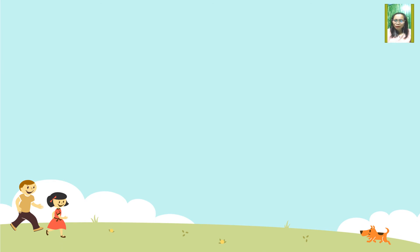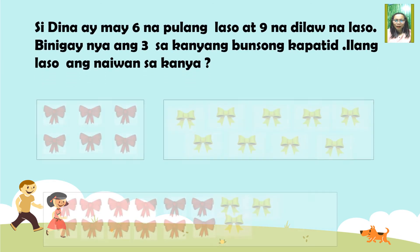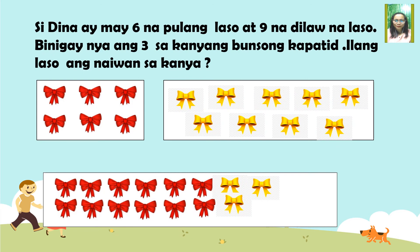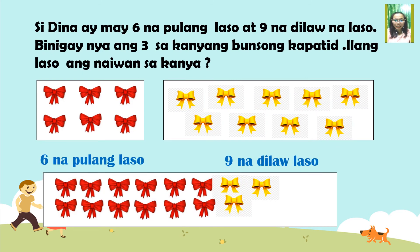Narito pa ang isang halimbawa ng isang sitwasyon. Si Dina ay may anim na pulang laso at siyam na dilaw na laso. Pinigay niya ang tatlo sa kanyang bunsong kapatid. Ilan lahat ang laso na naiwan kay Dina?